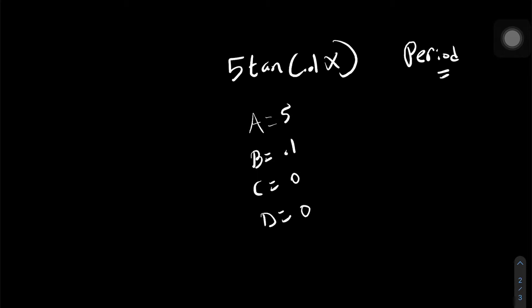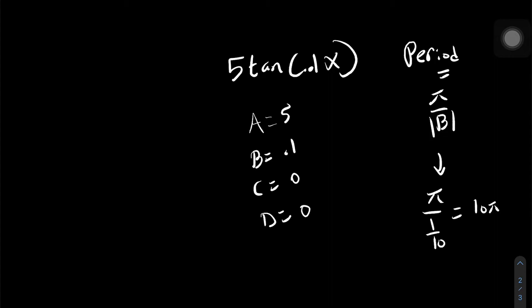So to find the period of a tan, it's equal to pi over b, the absolute value of b. In this scenario, pi over 1 tenth, which is going to be 10 pi, and that's our period.